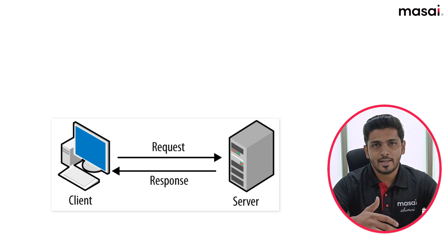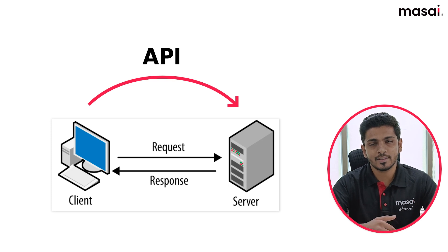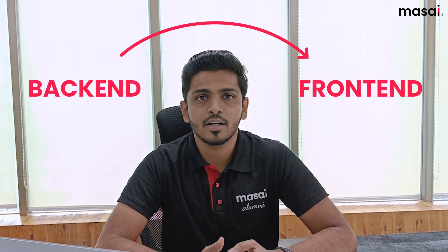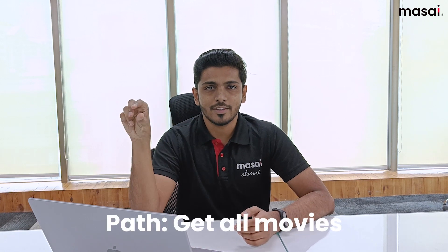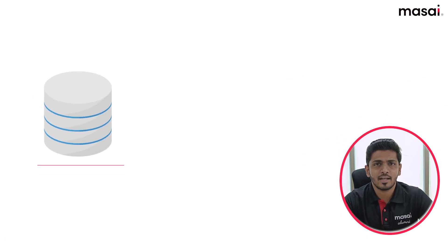So for the front end to connect with the server, something called an interface — the API interface — helps the front end make requests for whatever it requires. Let's say it requires all the shows for tomorrow. As an API endpoint, let's say 'get all shows', and the backend sends that particular data to the front end. This is the API. When you build an API, you have to specify the path. For example, if the path is 'get all movies', the result should be all the movies — not all cinema halls. So depending on what the request is, the relevant response, fetching data from the database, needs to be sent to the front end. That's what building an API means.